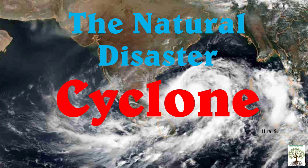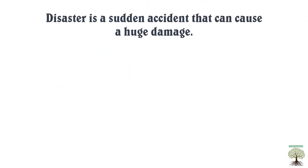Cyclone is a natural disaster. There are two kinds of disasters: man-made and natural. Man-made disasters include war and terrorism. Natural disasters include earthquakes, cyclones, and floods. A disaster is a sudden accident that can cause huge damage or loss of life.